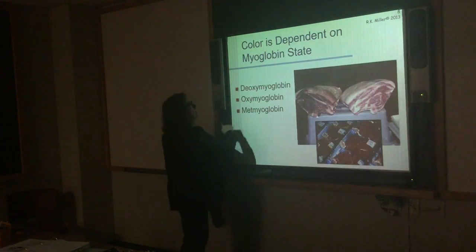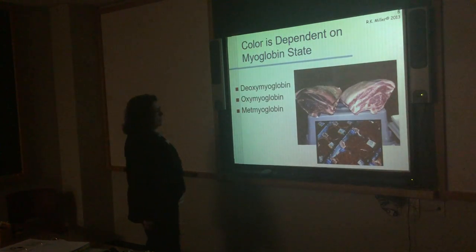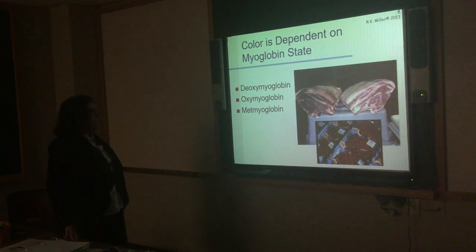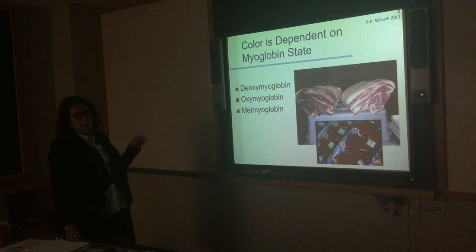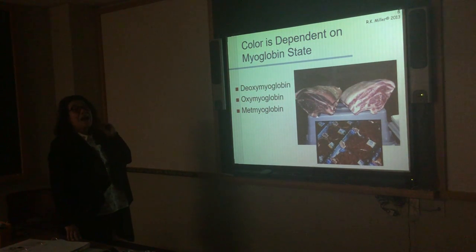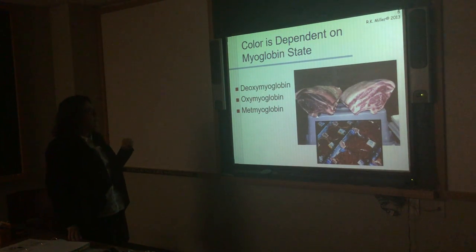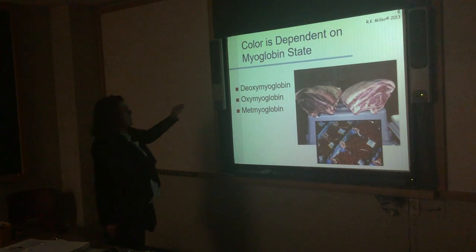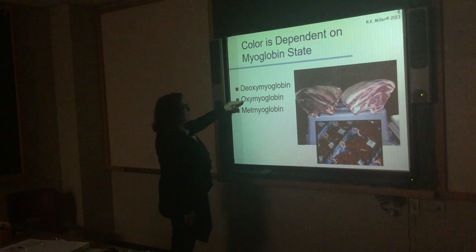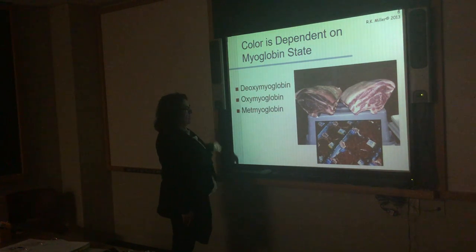So those things affect how much myoglobin is there. Then the next point is not just how much myoglobin is there, but what is the state of the myoglobin. There are three potential states: deoxymyoglobin, oxymyoglobin, and metmyoglobin.